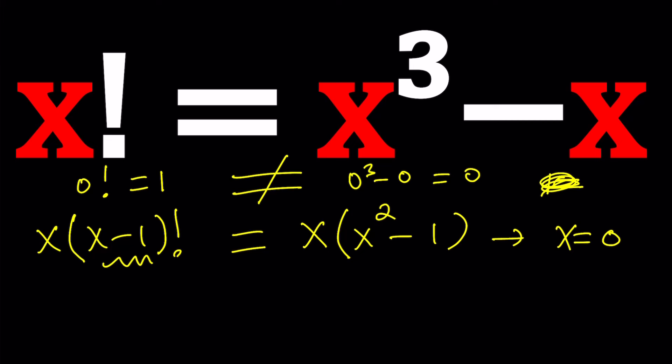So 0 is not a solution, but we can cancel it out. Why? Because we know x does not equal 0, so we're allowed to divide both sides by x. Obviously, this equation is only going to work if x is greater than 1.